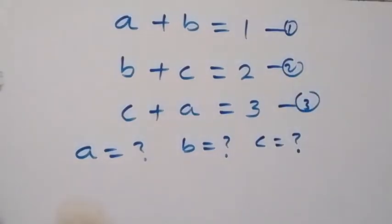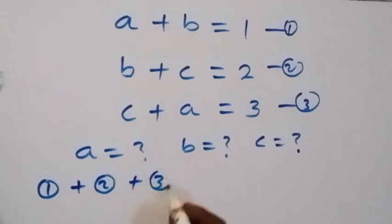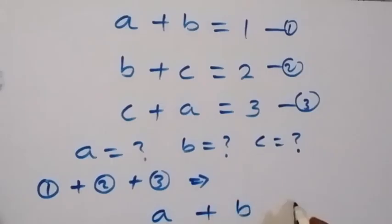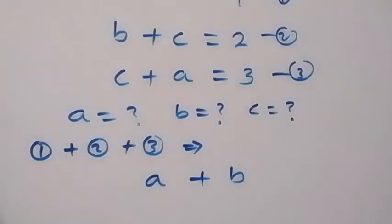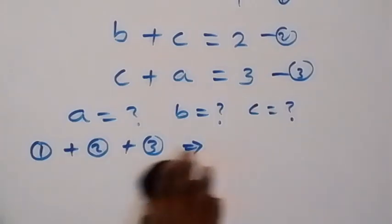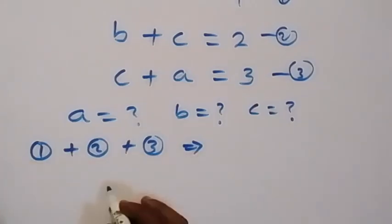So from here, let's add equation 1, 2, and 3. Equation 1 plus equation 2 plus equation 3. Here we imply, when we have this from here, we have in equation 1, what we have is a plus b equals to 1 from here. So we have a plus b equals to 1 in equation 1 there.